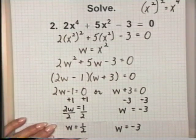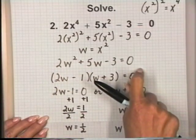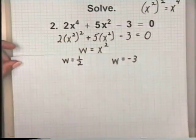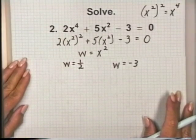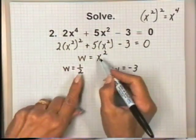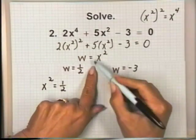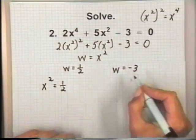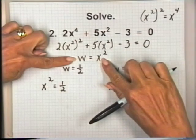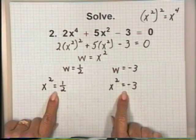Do we stop here? No. One-half and negative three are solutions for the quadratic equation in w. We want the x values. Going back to our substitution w equals x squared: if w equals one-half, then x squared equals one-half. If w equals negative three, then x squared equals negative three. These two equations are quadratic in x. Since we have the quadratic term and a constant, we'll extract roots.